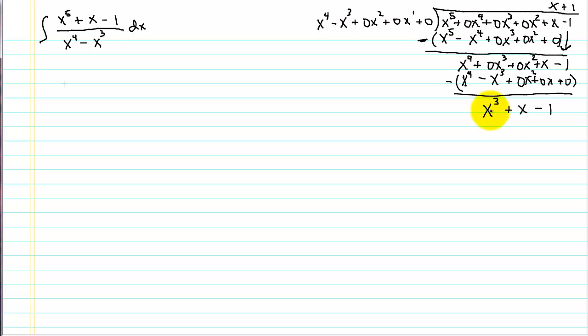So remember the way we write this is by doing the long division we have split this up into x plus one plus now our remainder. So we have essentially written this in the equivalent of a mixed number. This part of the integral we can integrate using our basic rules but we have to use partial fraction decomposition for this part.